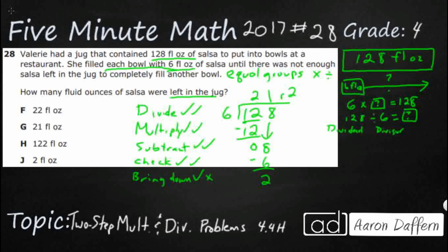I can show it as 21 remainder two. I can show it as 21 and two-sixths. You can make a fraction by using the remainder as the numerator, your divisor as your denominator.